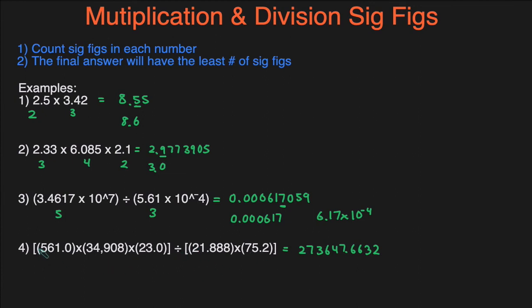The first number has four sig figs. By the way, if you're having difficulty counting sig figs, definitely check out my video where I go over that in detail with a lot of examples. The second number has five sig figs, the third number has three sig figs, the fourth has five sig figs, and the fifth has three sig figs. So of all these numbers, the smallest count is three, which means our final answer should have three sig figs.